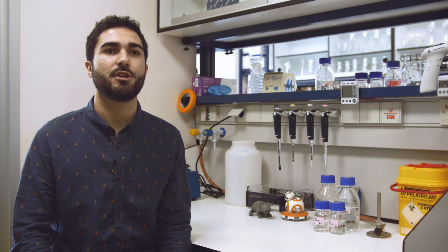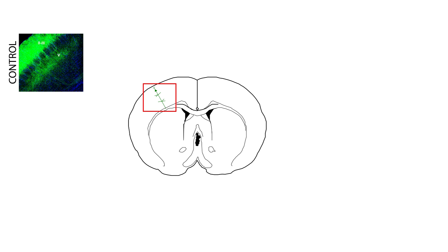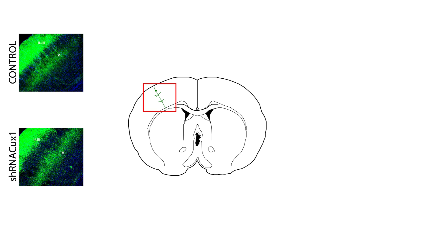We decided to knock down CACS1 expression in the upper layers to investigate possible axonal defects. Using in utero electroporation, we found that neurons with deficient expression of CACS1 do not have defective migration or positioning in the cortical plate. They develop normal ipsilateral branches in layers 2, 3, and 5 and send their axons as expected to the contralateral hemisphere.